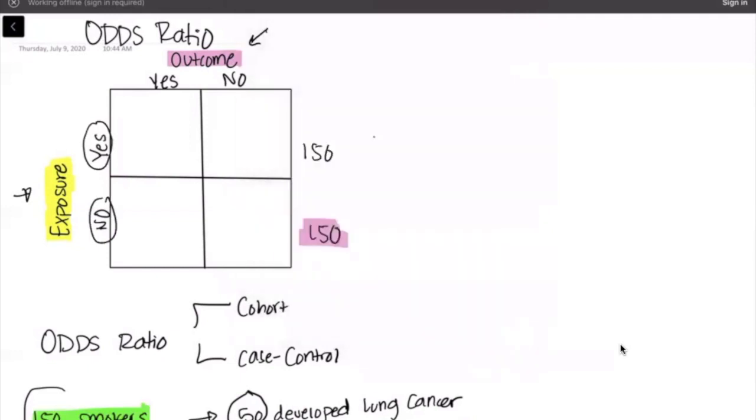Now 50 developed lung cancer, so 50 out of my 150 smokers developed lung cancer and I'm putting it under yes for developing the outcome, compared to 22 of my 150 non-smokers who develop lung cancer. The next thing I like to do is I like to label my boxes A, B, C, D.